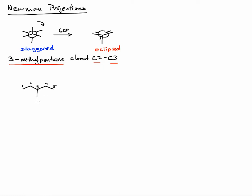We need to add wedge and dash notation to draw our Newman projection. The methyl group at C3 is drawn as a wedge, meaning it's coming out towards us. For clarity, I'm also going to draw in the dash, which represents a hydrogen going back. For our Newman projection, we want to look down the C2-C3 bond. We also put in the wedge-dash for carbon 2 — both of its substituents are hydrogen.